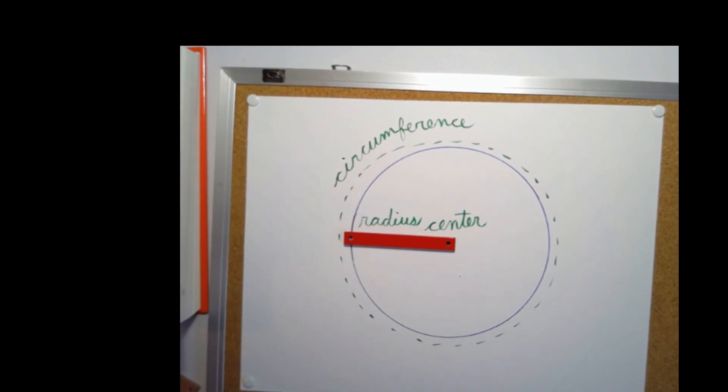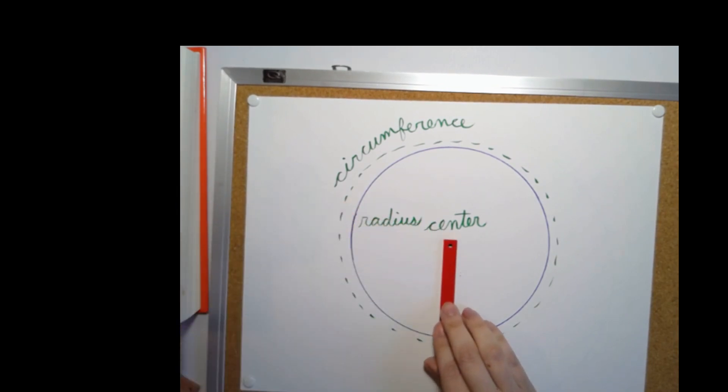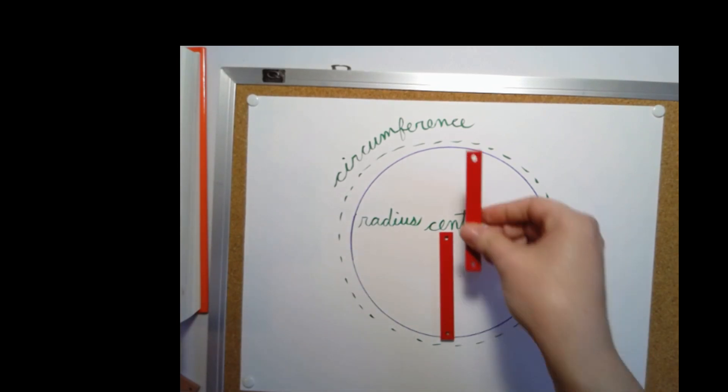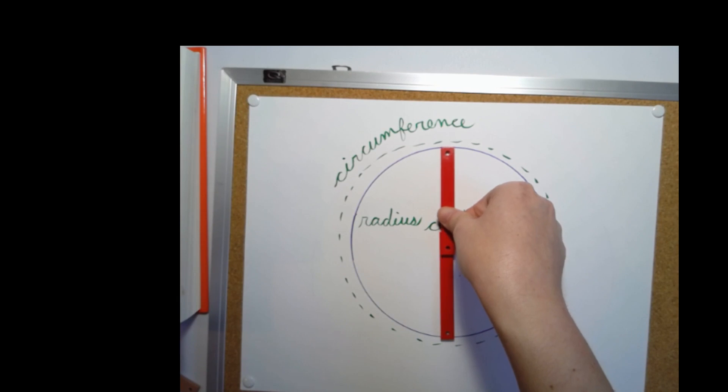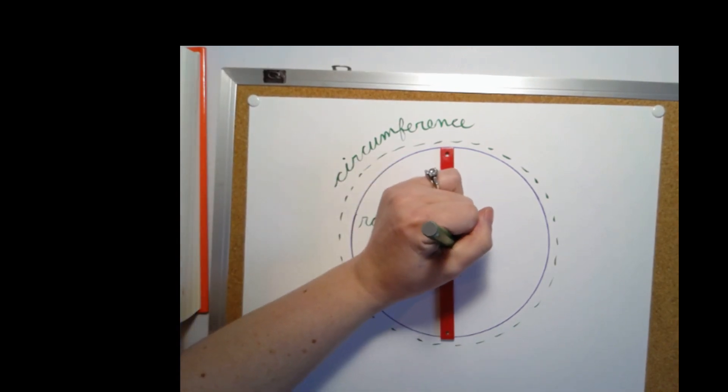And if I draw another line all the way across my circle, so from one parameter, one part of the parameter to the other, this is called a diameter.